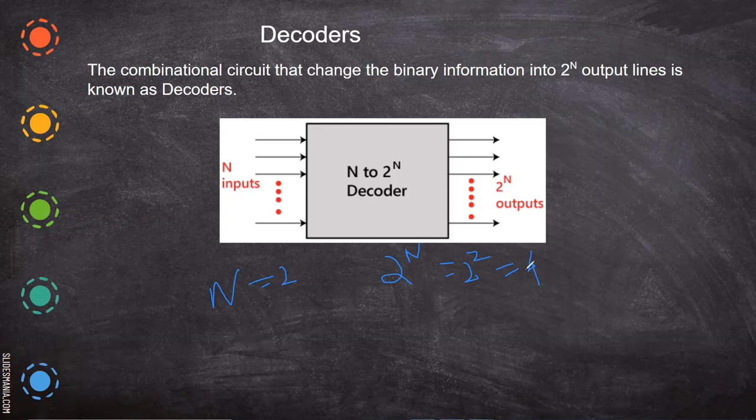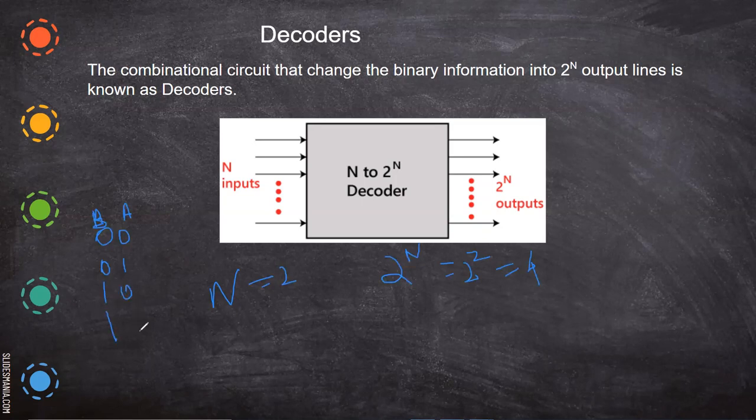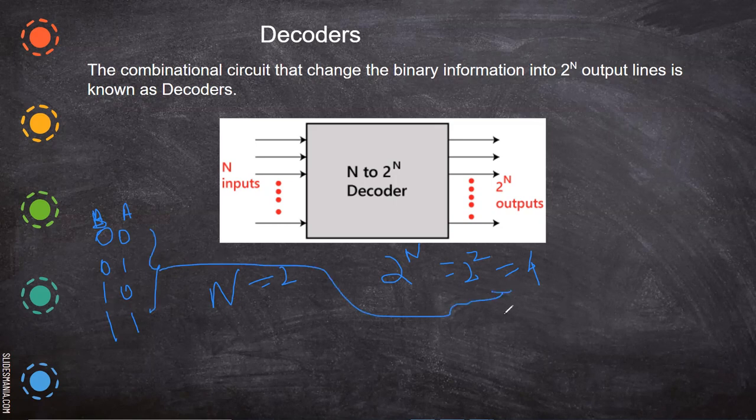So what is the two input and four output? That combination, that is 0, 0. So for example, this is one input and this is another input. So you will have the combination 0, 0 and 0, 1 and 1, 0 and 1, 1. So this is what the meaning of this 4. Two inputs and four outputs.